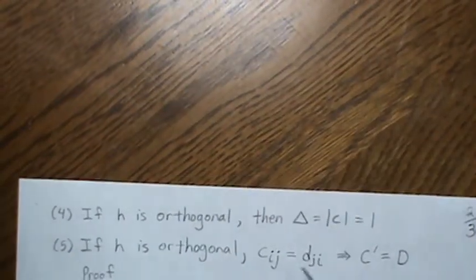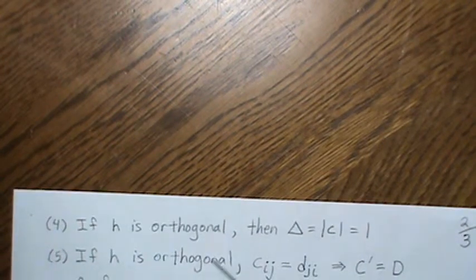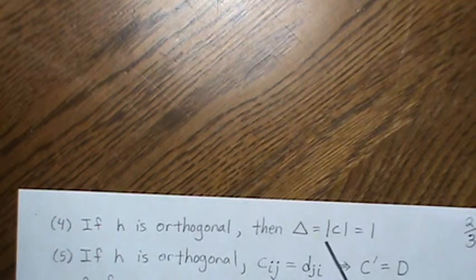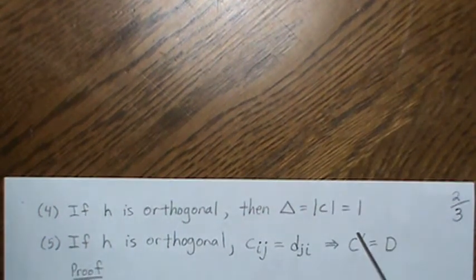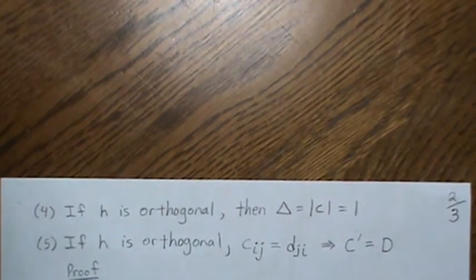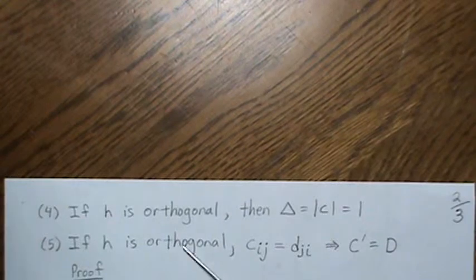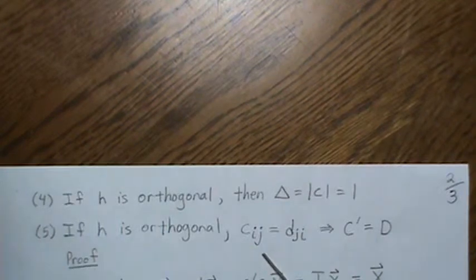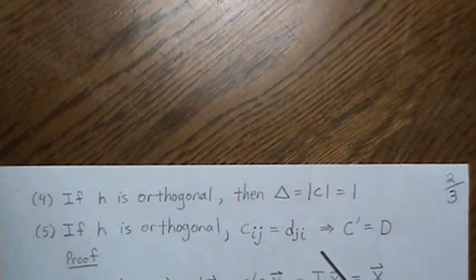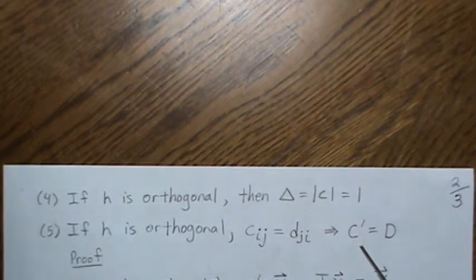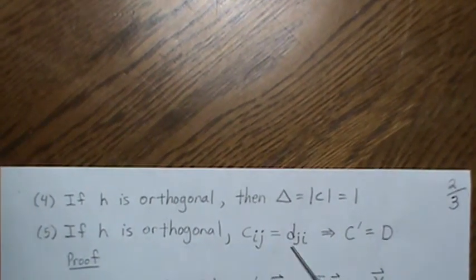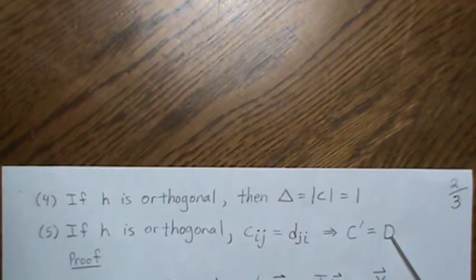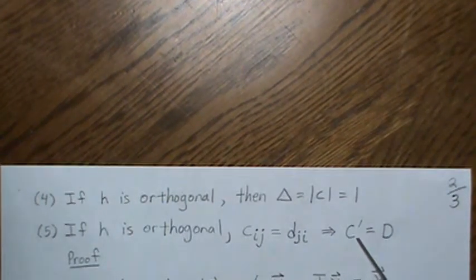Another property of orthogonal transformations is that if C is orthogonal then its determinant equals one. I don't have a proof here in the interest of time, but there are plenty of videos where you can look that up. Also, if H is orthogonal, the inverse of C is actually the transpose of C — we'll give a little proof of that in a moment.